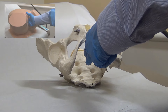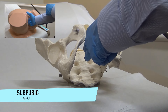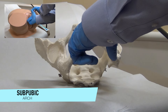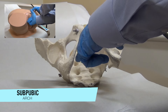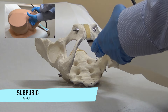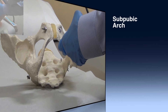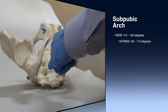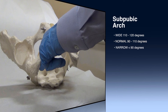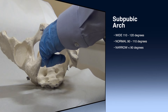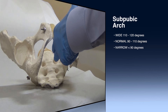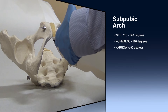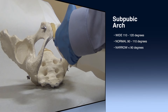Finally, the subpubic arch is examined. This can be performed by palpating the inferior aspect of the pubic bone and estimating if the arch is approaching 110 to 120 degrees, which is wide; greater than 90 degrees but less than 110 degrees, which is normal; or less than 90 degrees, which is narrow. This is the final assessment of the pelvic outlet.